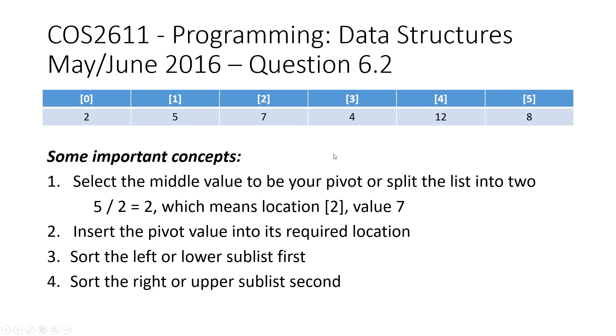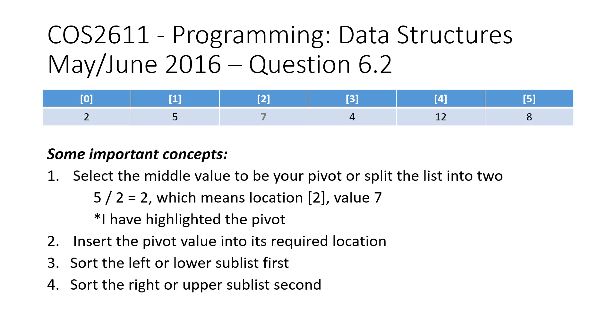If I use the standard C++ way of getting 5 divided by 2, I find that 2 is my midpoint. So I'm going to use 7. The value of 7 is my pivot. The first thing I've done is I've just highlighted what I'm using as my pivot, and it's still currently under the same location it was.